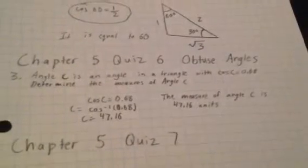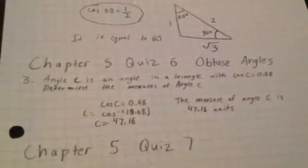So, the measure of angle C is 47.16 units. All right. Thank you.